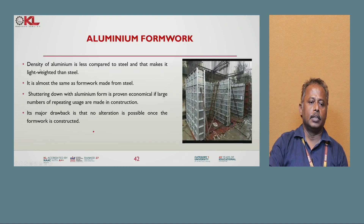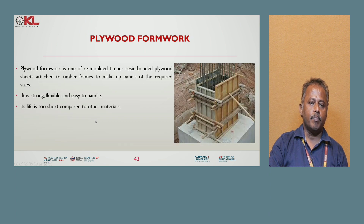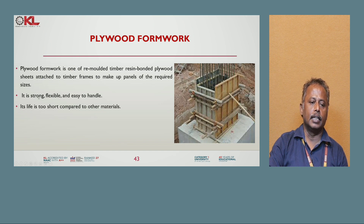Next, aluminium formwork. Aluminium has less density compared to steel, making it lighter than steel. It is almost the same as steel formwork and is economical if a large number of repeated uses are made in construction. Next, plywood formwork. Plywood formwork uses resin-bonded plywood sheets attached to a timber frame to make up panels of the required size. It is strong, flexible, and easy to handle, though its lifespan is shorter compared to other materials.